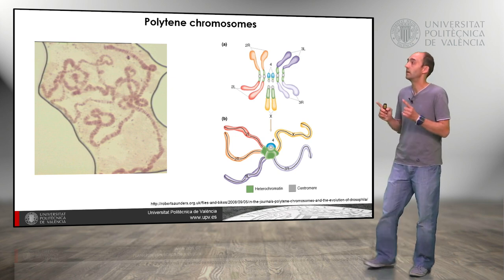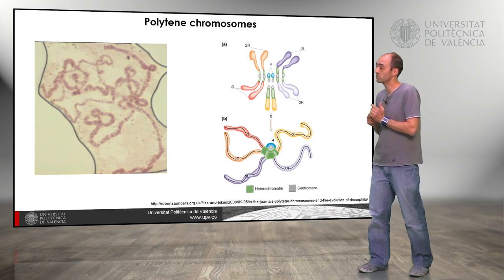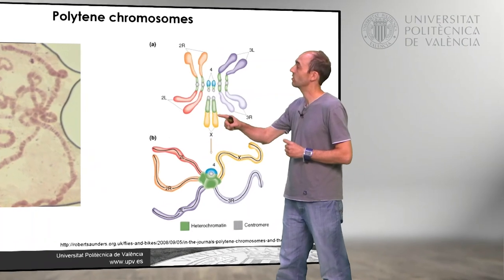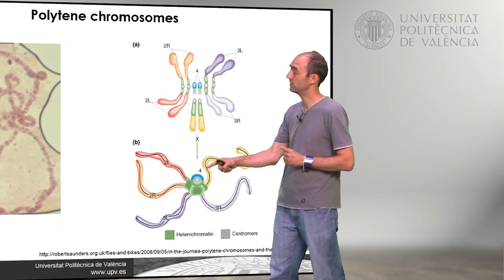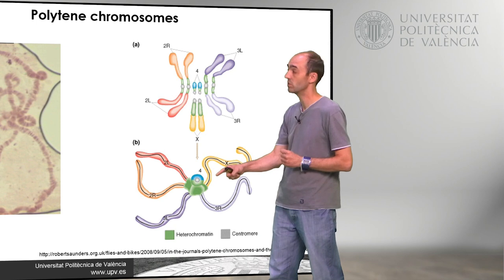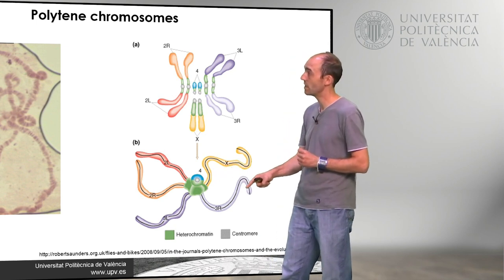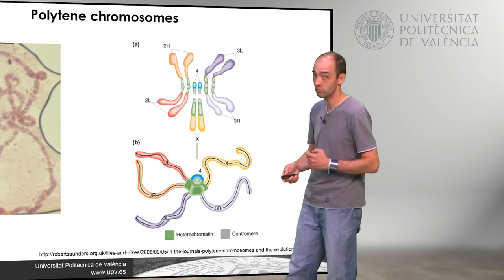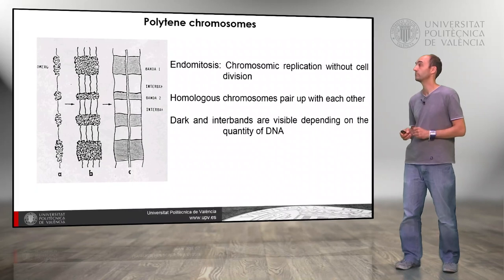Moreover, the homologous chromosomes pair and join through the centromere. So we have here the chromosomes of Drosophila: chromosome 4, which is very small and is in the centre, the X chromosomes, and the two arms of chromosomes 2 and 3. All these chromosomes are thicker and joined together in the cell.